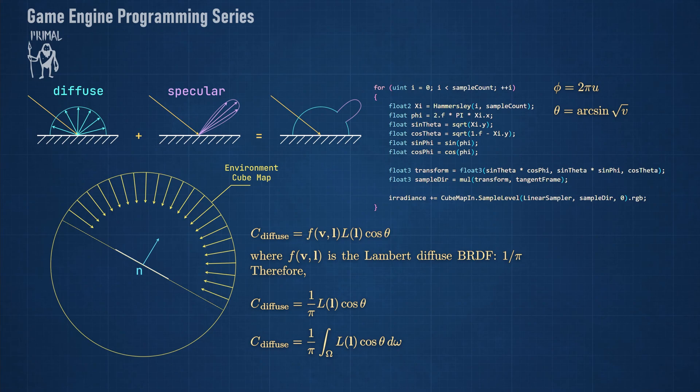I mentioned that we can get these equations using the theory of importance sampling, which also determines how we should evaluate the integral using a discrete sum as we see here in the shader code. Although we didn't end up using this method for pre-filtering the diffuse component, we are going to use importance sampling for the specular part. And in preparation, I'd like to give a brief introduction to this method and also show you how we arrive at these results.